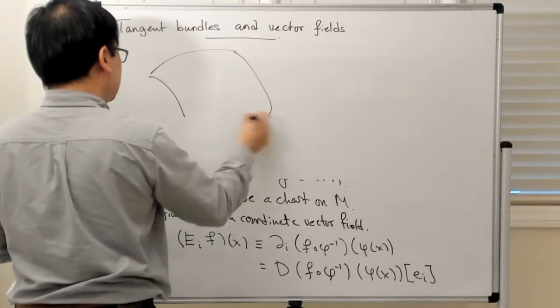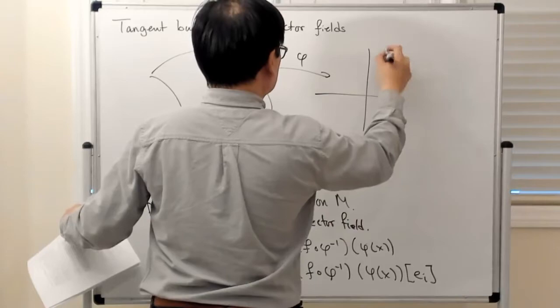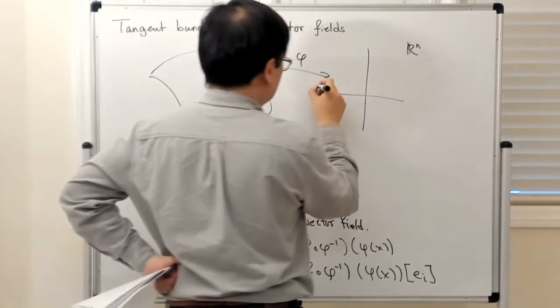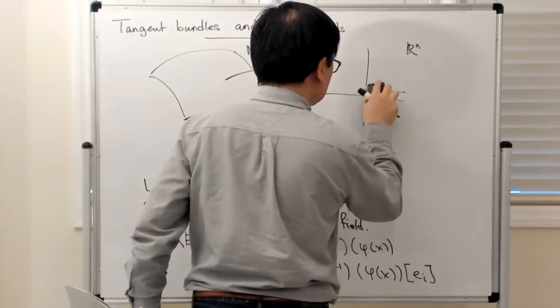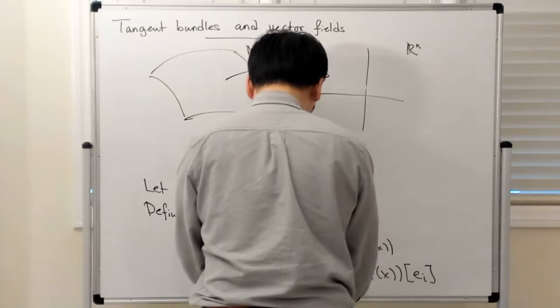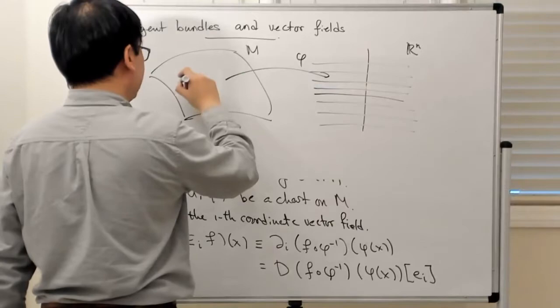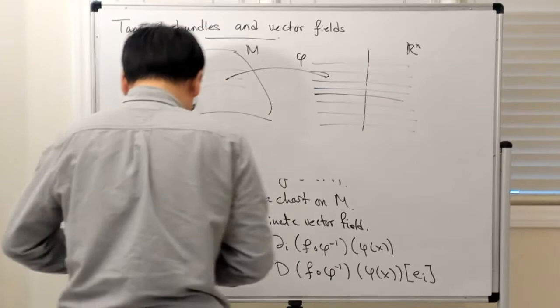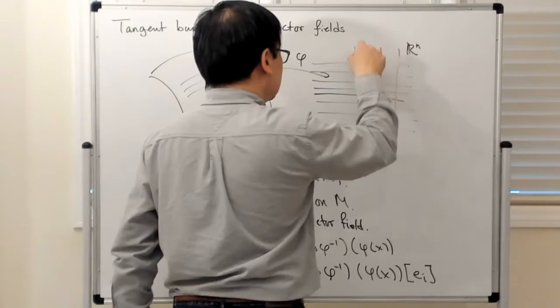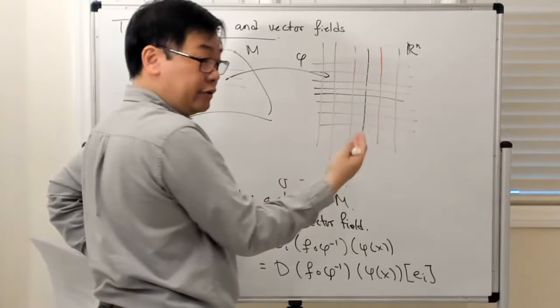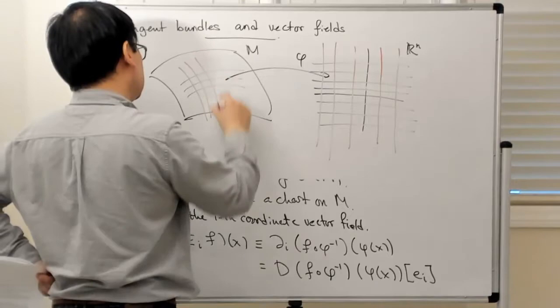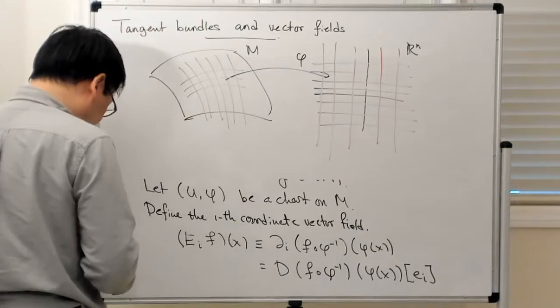The picture which is perhaps most helpful is the following: you have a manifold M, you have the chart mapping to Rn, and on Rn you have the coordinate lines. Let me draw them — the blue coordinate lines here — and then you can map them back; they might correspond to lines which look like this on the manifold. And then you have the red coordinate lines, which are the vertical ones. These are lines where one of the components is constant.